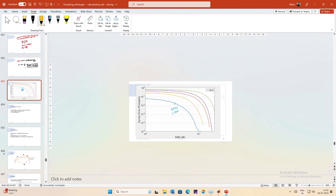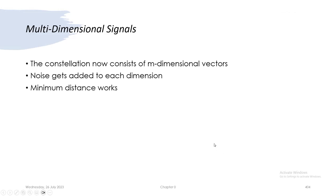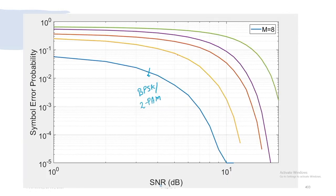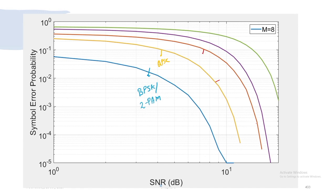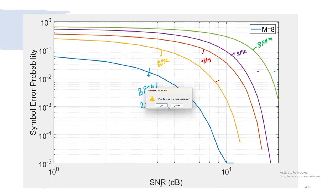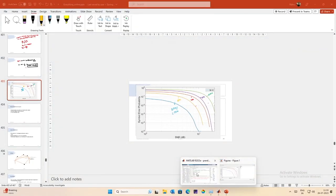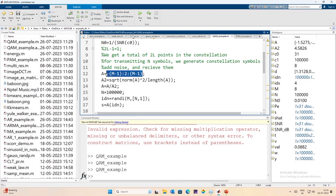I will close and reopen PowerPoint to solve the display issue. So this is QPSK, this is 4 PAM, purple is 8 PSK, and finally green is 8 PAM. I can add 16 QAM or rectangular 8 QAM here as well. Let me do that — I will define rectangular 8 QAM manually rather than using a code-based definition.